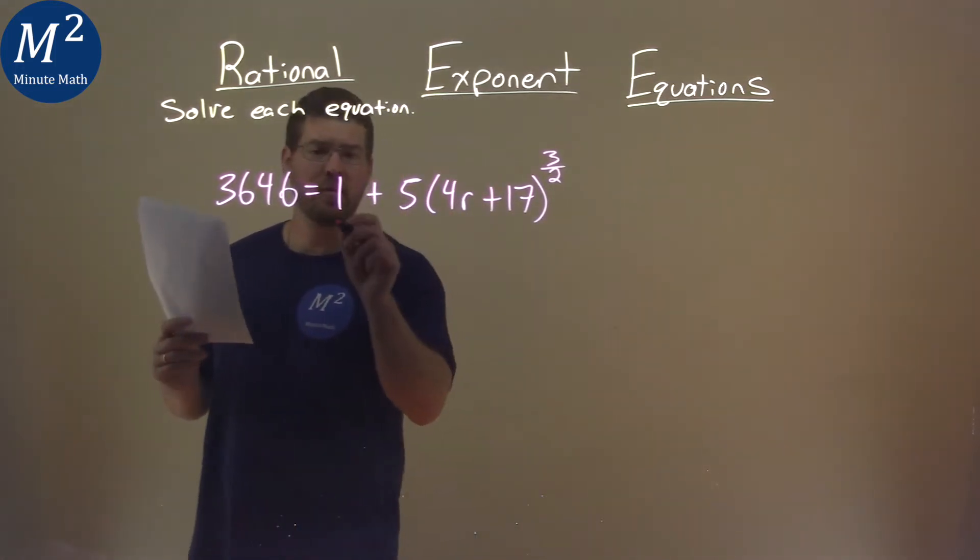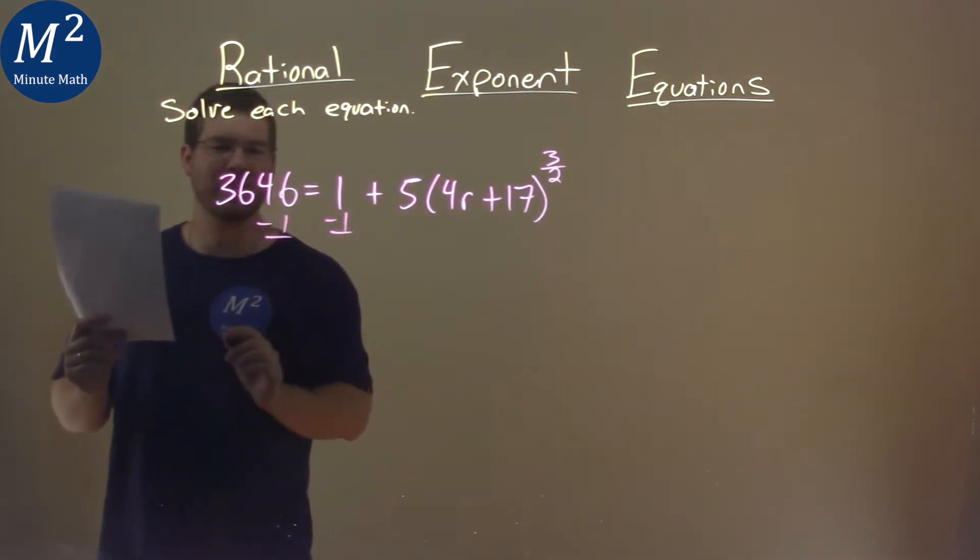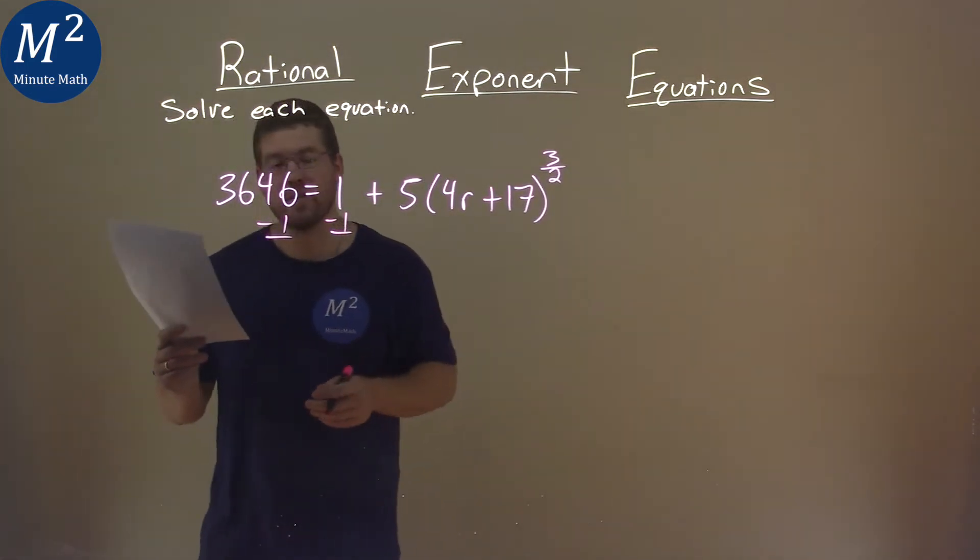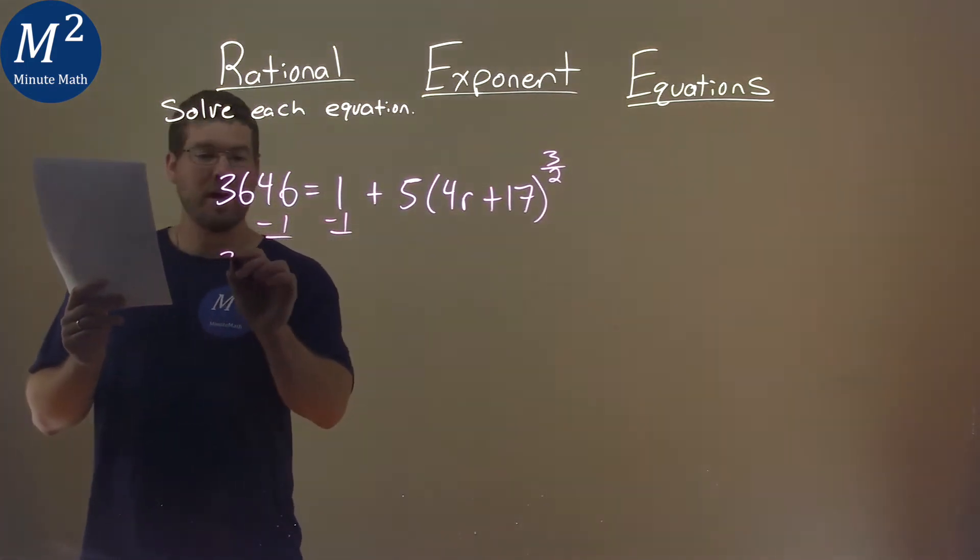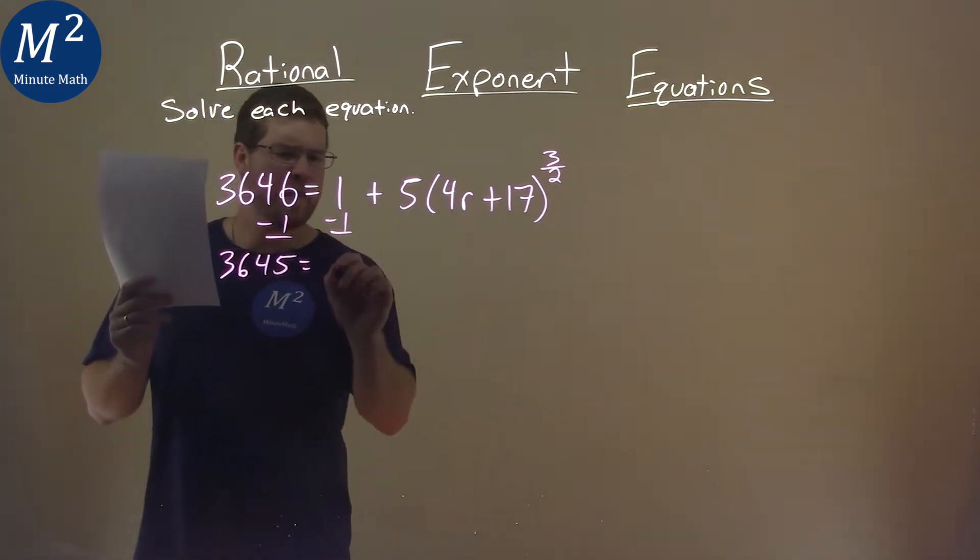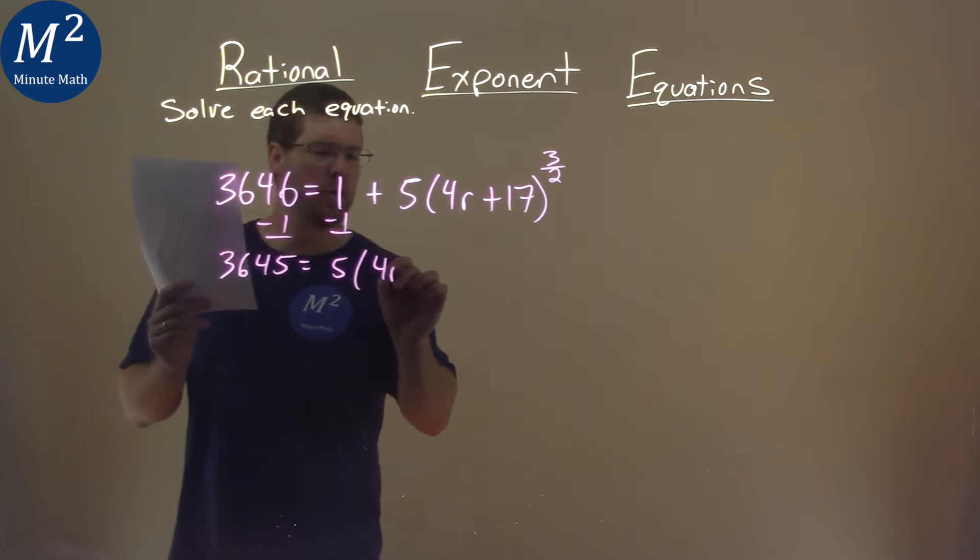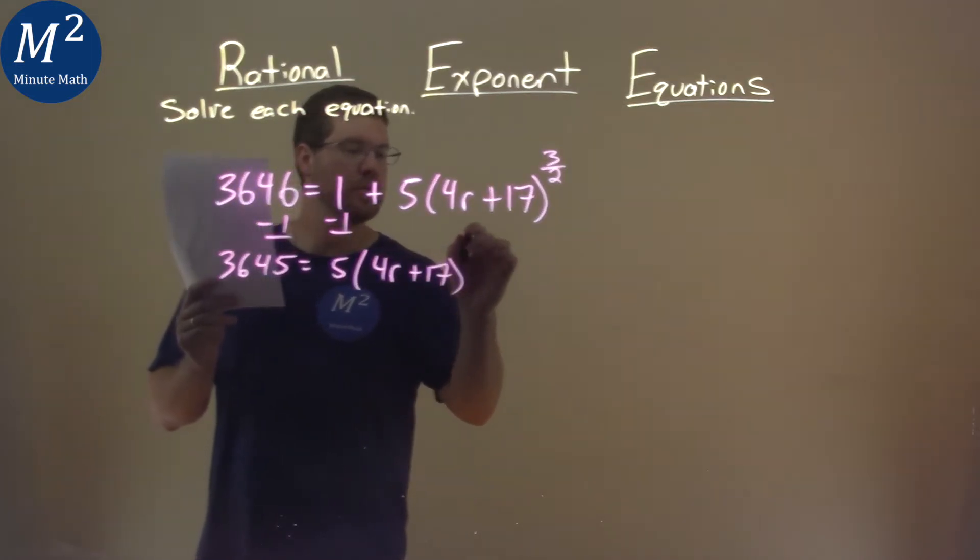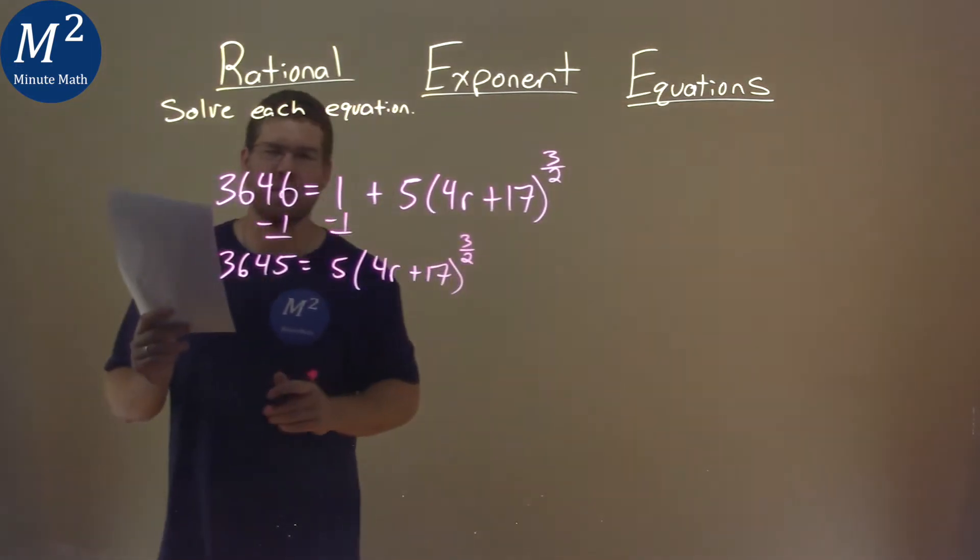Keep it simple. First thing we do is subtract 1 from both sides. 3,646 minus 1 is 3,645. And then we have 5 comes down here, 4r plus 17 to the 3 halves power.